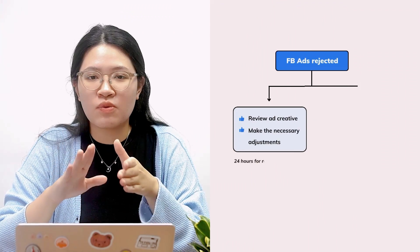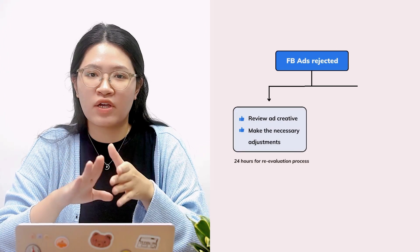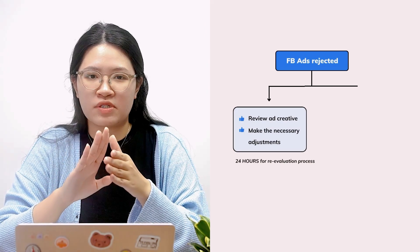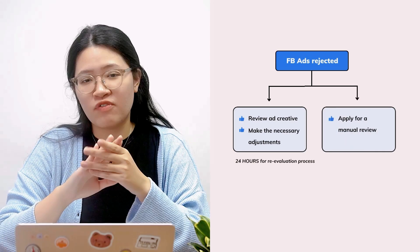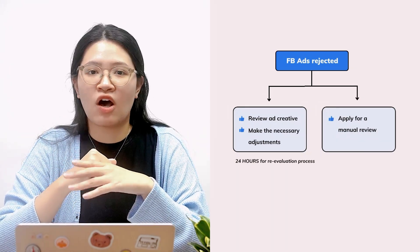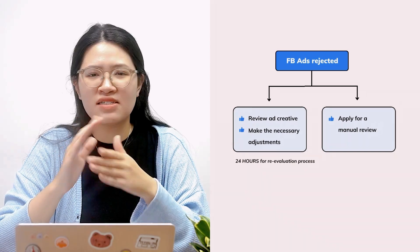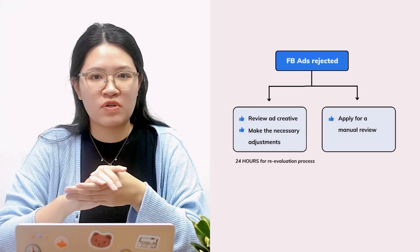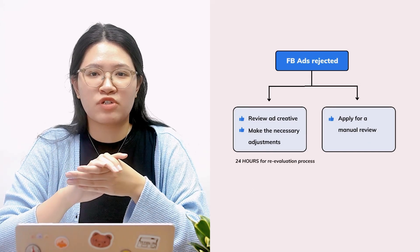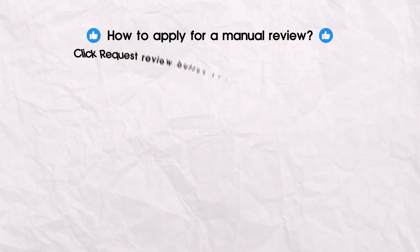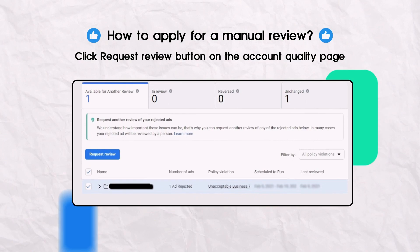In this scenario, carefully review your ad creative and make the necessary adjustments to ensure it aligns with Facebook's requirements. Your ads will then undergo a re-evaluation process that typically takes 24 hours. However, if you are confident that your ads adhere to all Facebook guidelines yet they continue to face rejection, apply for a manual review. Simply head to Ad Manager and click the request review button on the account quality page.